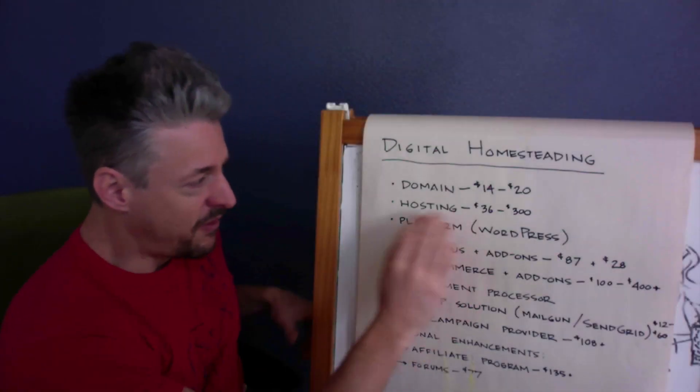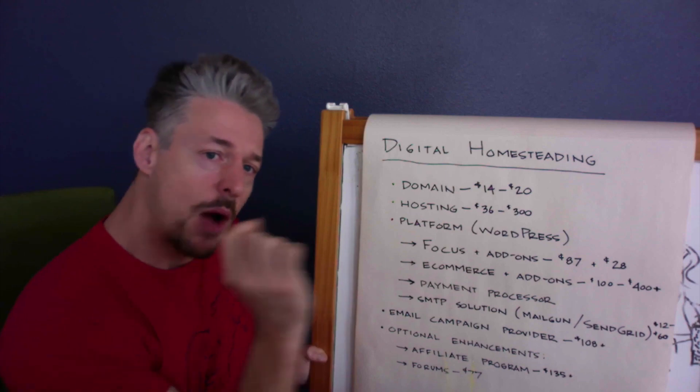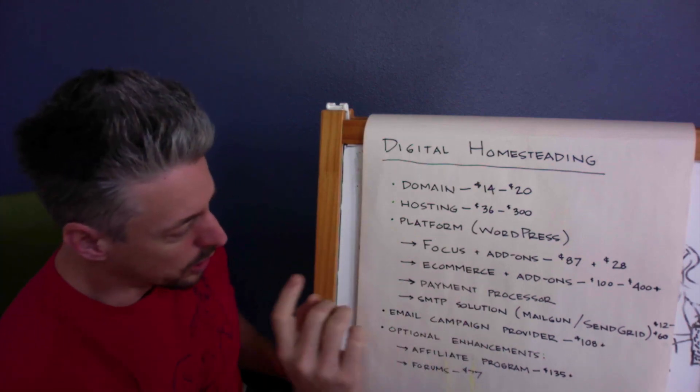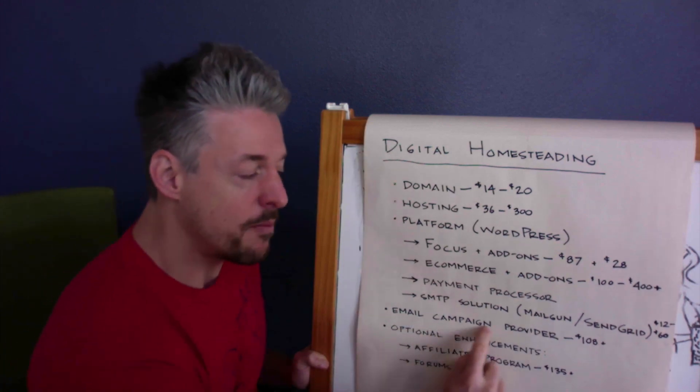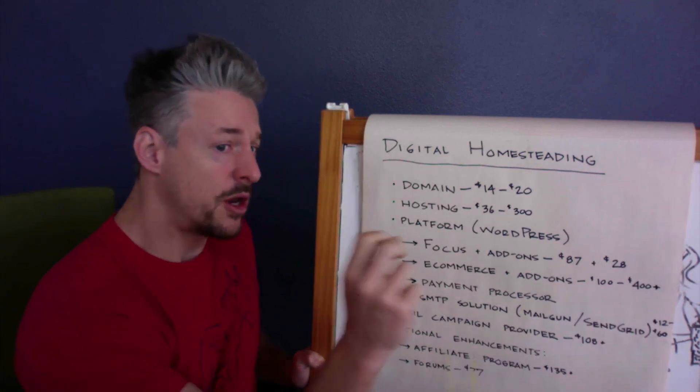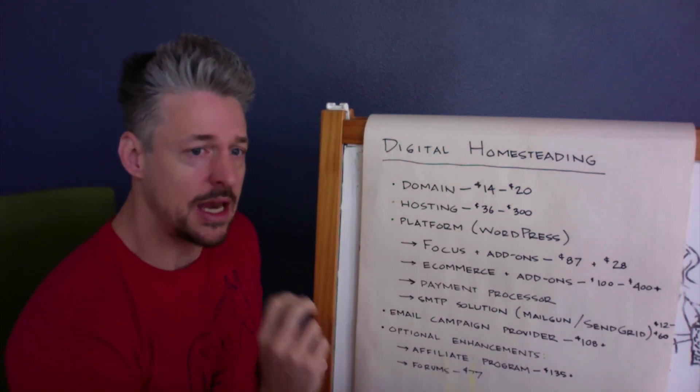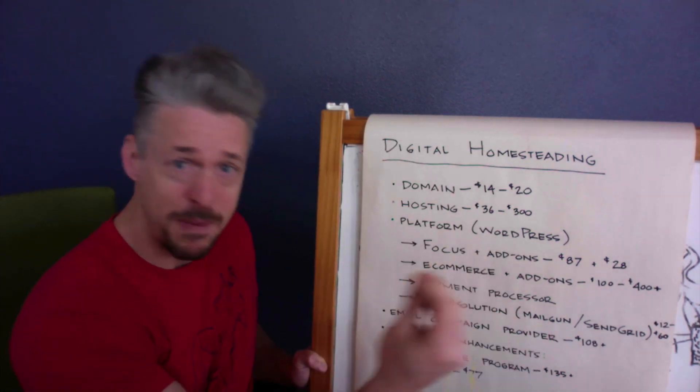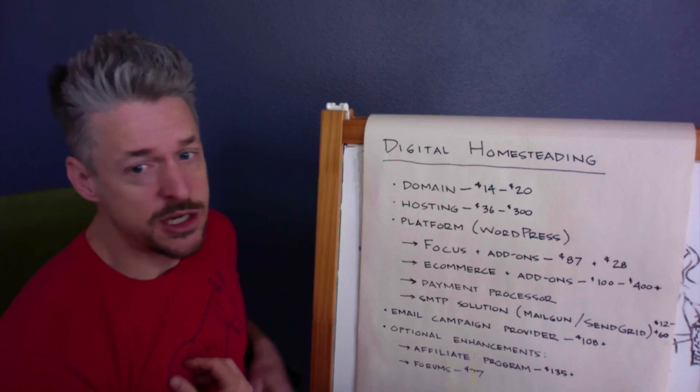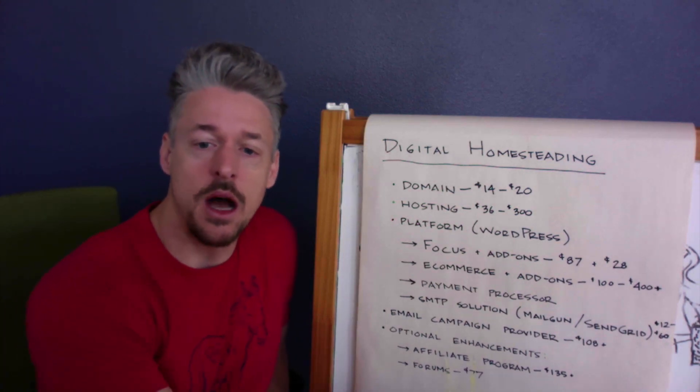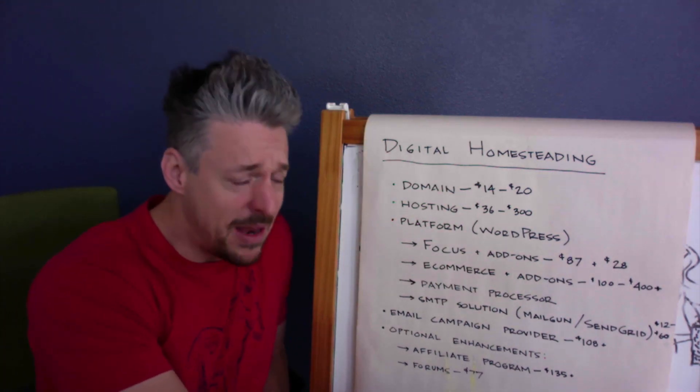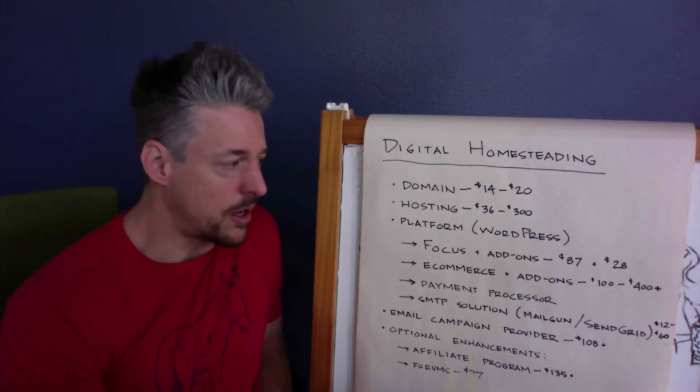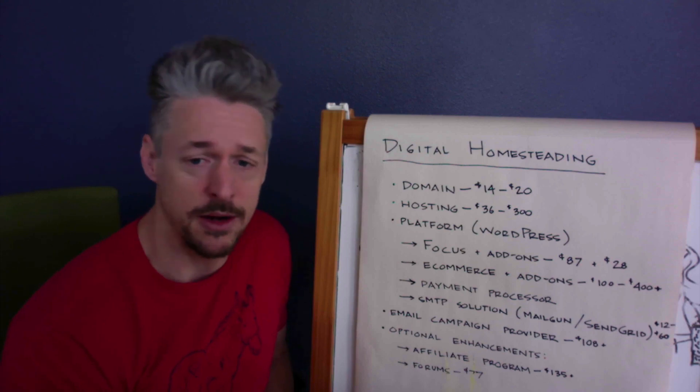We've got our basic $50 baseline with domain and hosting, but now we're going to be a little more sophisticated. We're going to need an email campaign provider so that I can put an email form on my site so I can have people join an email list so I can contact them and build a base of customers this way. I use ConvertKit. There's other ones like Constant Contact, Aweber, Campaign Monitor. There's a bunch of these email campaign providers out there, but the basic starting cost for most is about $108 per year.